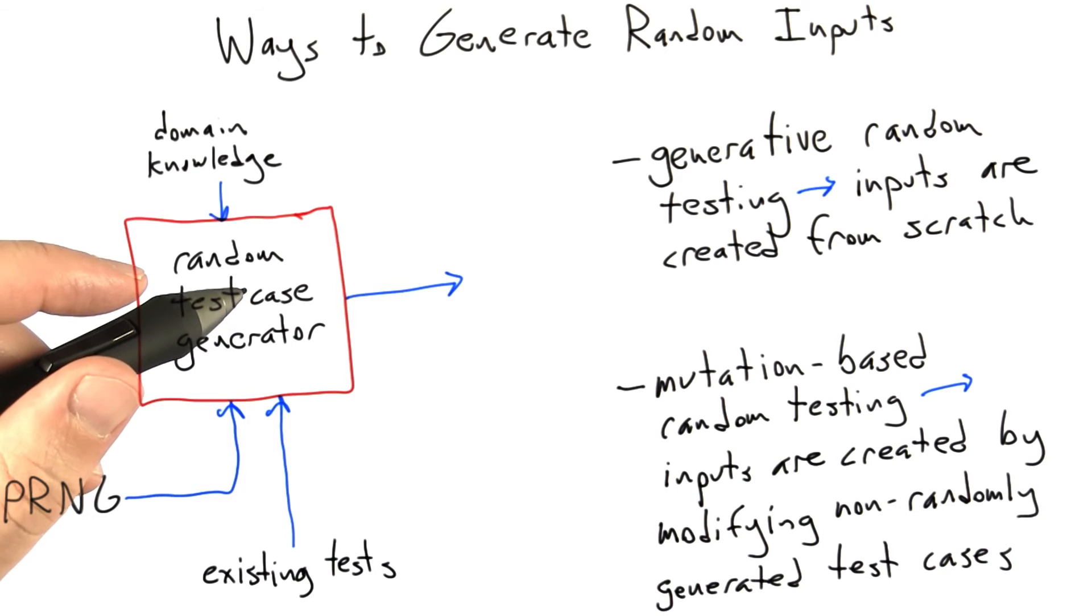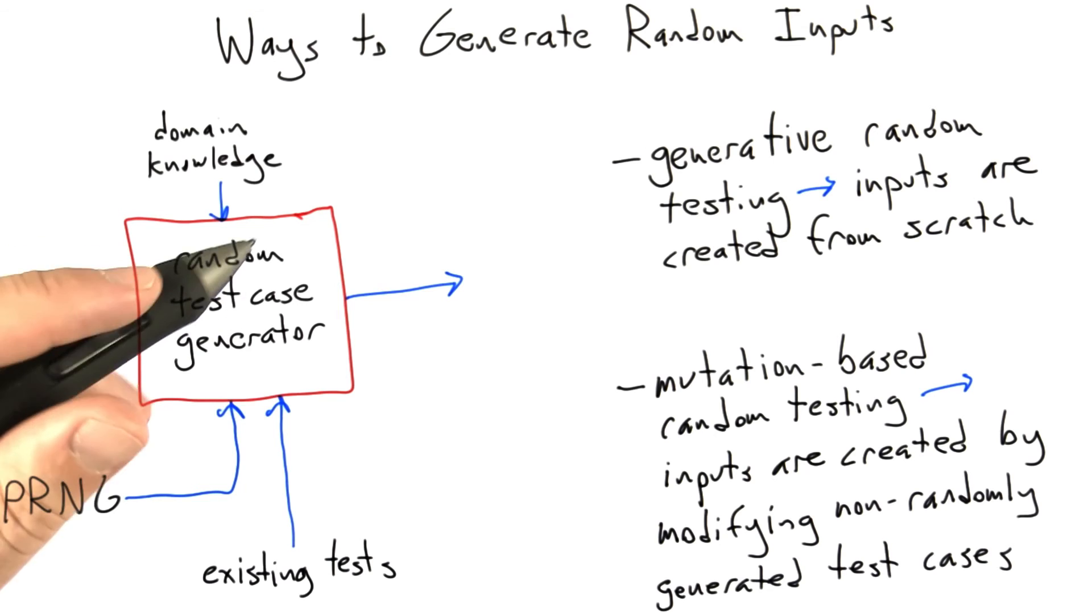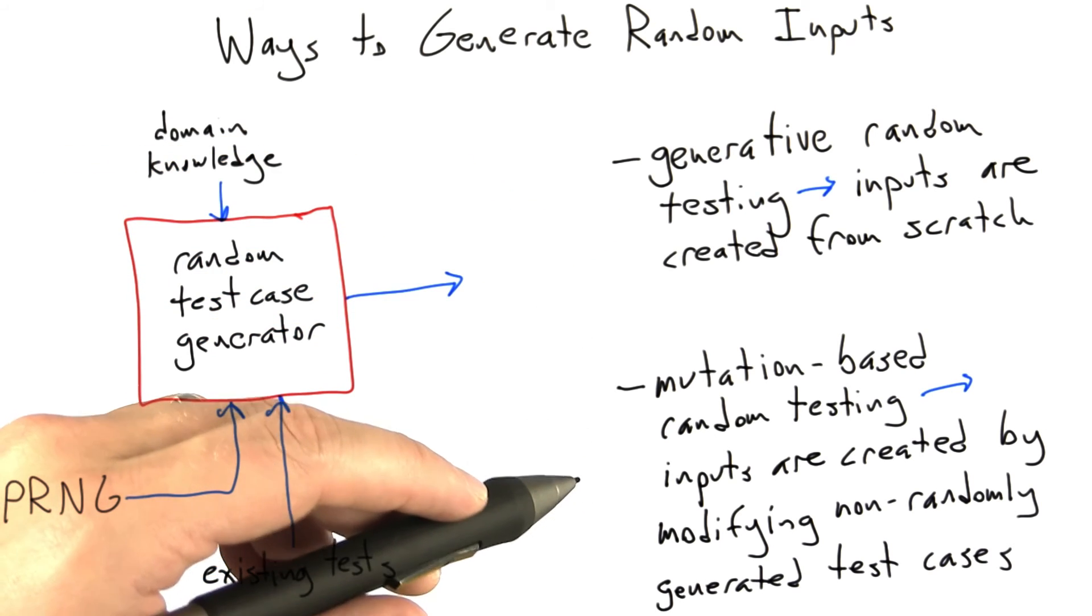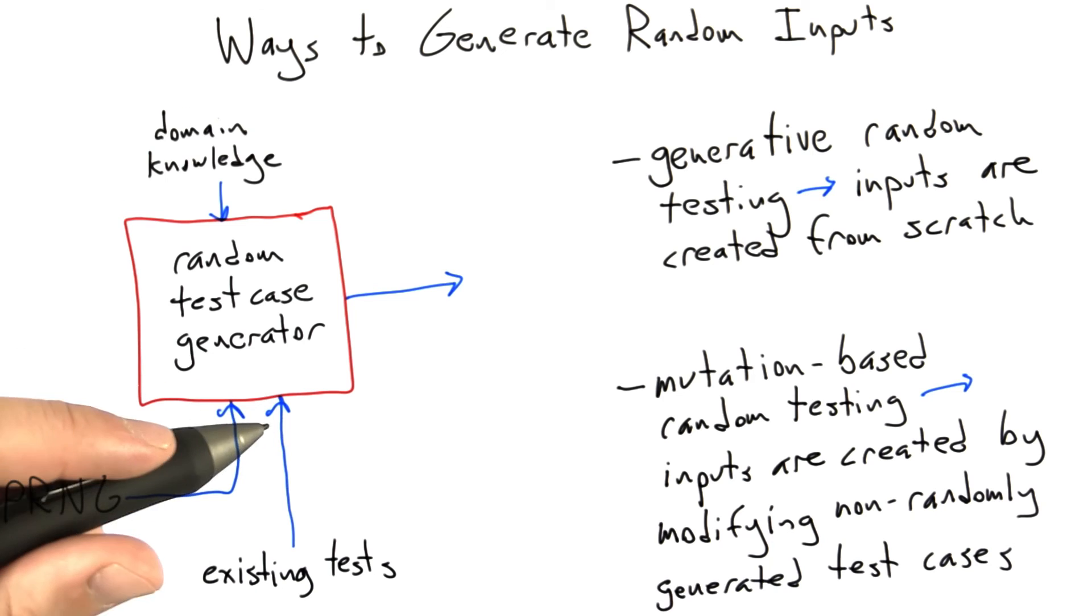In general, my view is that generative testing might be a little bit better at ferreting out really weird errors. But it's a lot more work to create entire random tests, at least if there are sophisticated constraints on their form, from scratch. Mutation testing, on the other hand, has a different strength.